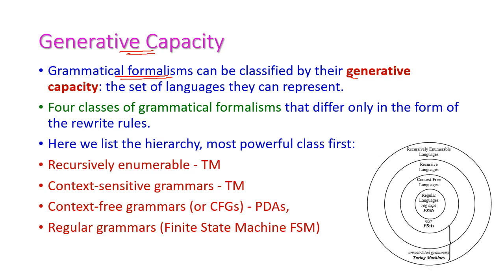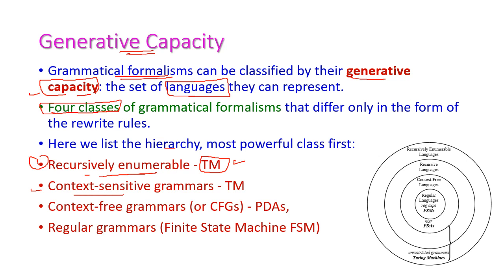Generative capacity. The grammatical formalism can be classified by their generative capacity — that is, the set of languages that can be represented. There are four important classes of languages. The outer circle is called as recursively enumerable language and recursive language, that is context sensitive grammar — these two are Turing machines. Next one is context free grammar, which uses pushdown automata. And regular grammar, that is finite state machine.